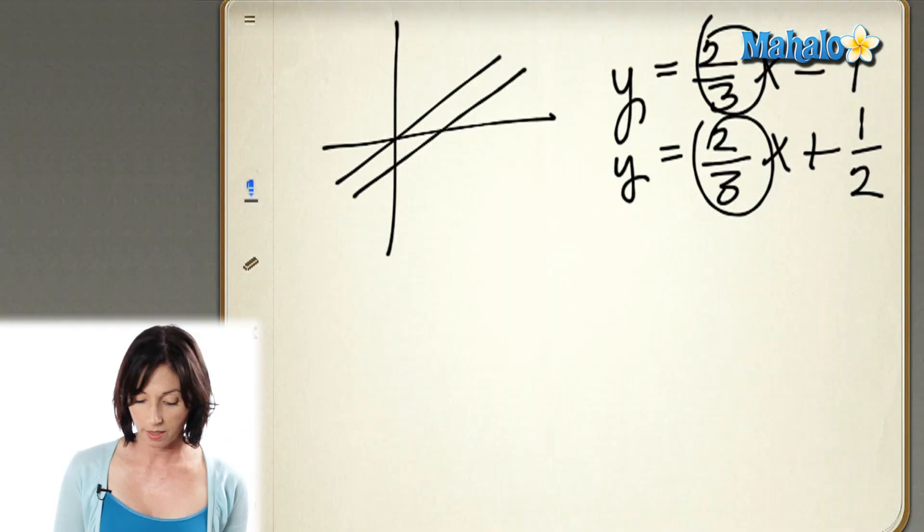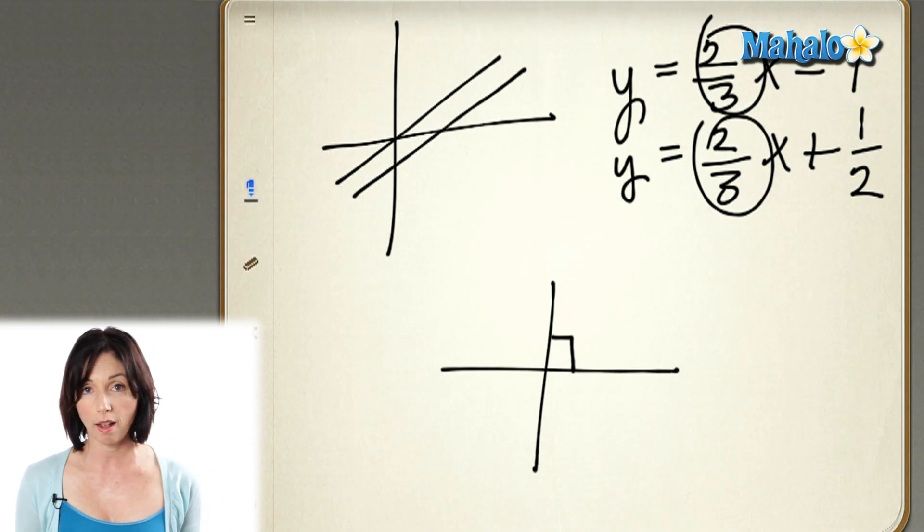Perpendicular lines intersect at a 90 degree angle, like this. So if you have one line that's horizontal and another line that's vertical, those two lines will be perpendicular to each other.